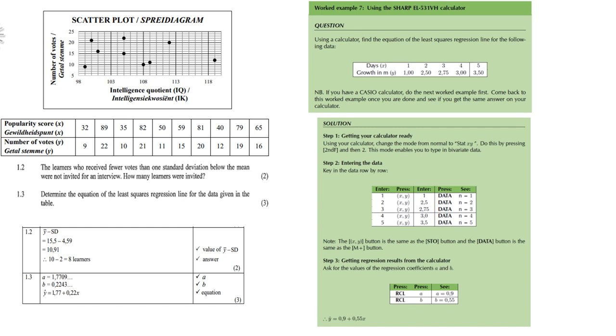Then 1.3 determine the equation of the least square regression line for the data given in the table. So again if you forgot how to do it, look at my example where I use a sharp EL531 calculator. Please work through the example to see exactly how the calculator must be used to get to the answer. Please follow this example. And of course in the memo the answer is therefore 1.77 plus 0.22x.